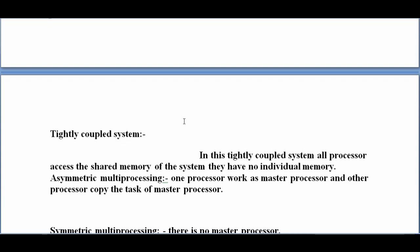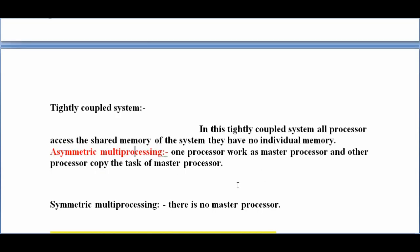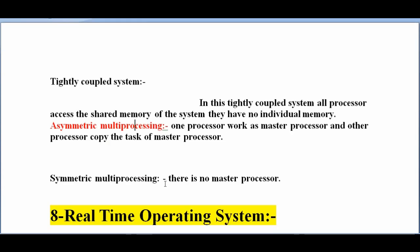There are two more concepts: asymmetric multiprocessing and symmetric multiprocessing. In asymmetric multiprocessing, one processor works as the master processor and the other processors copy the tasks of the master processor. In symmetric multiprocessing, there is no master processor.